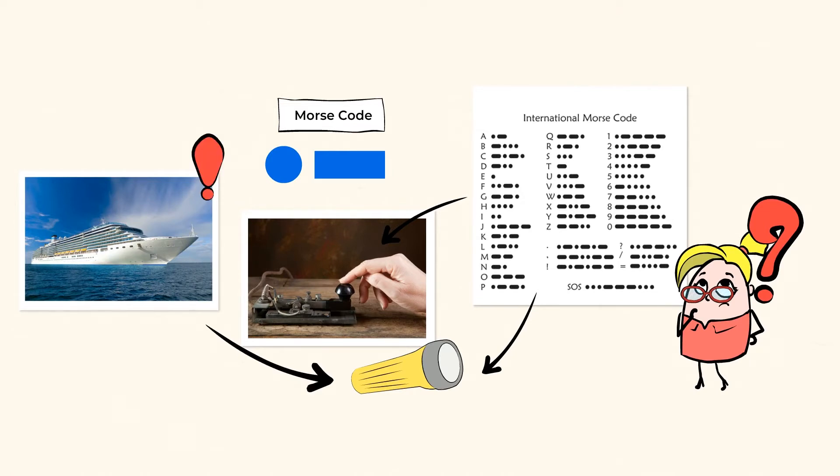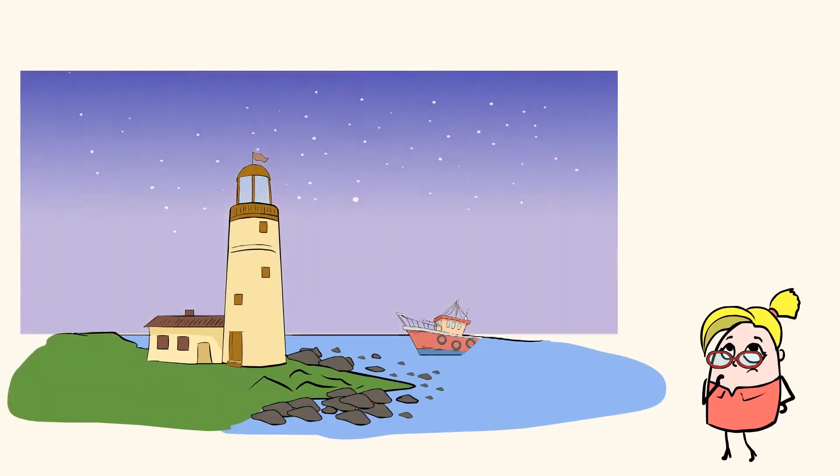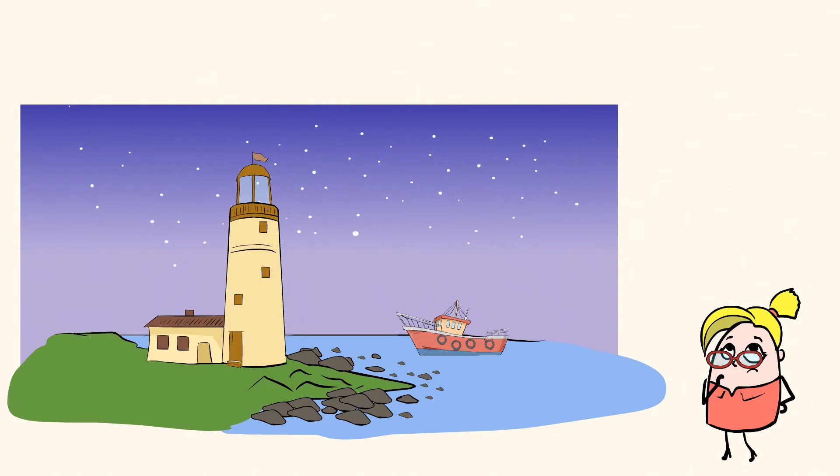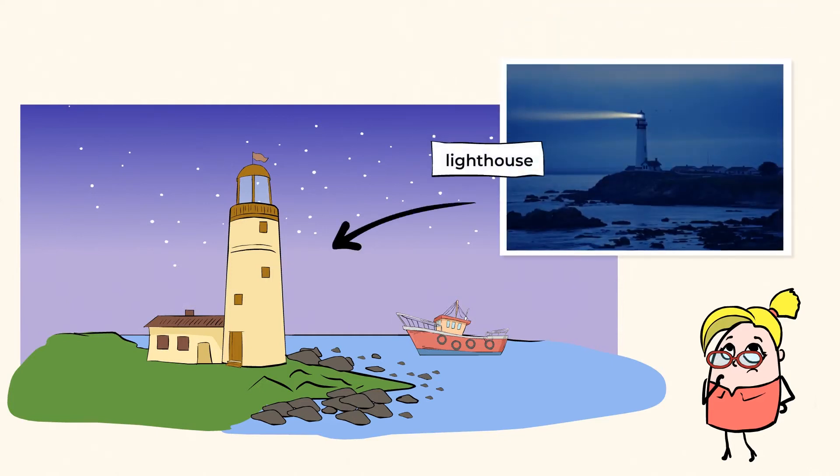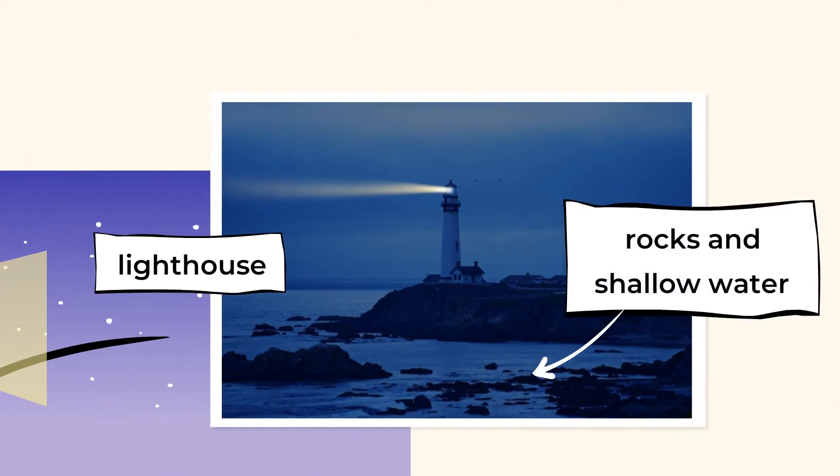And speaking of ships, let's explore another form of communication that helps keep ships safe. It sure is dark out here on the ocean at night. Boats must have a hard time staying safe when it's this hard to see. The lighthouse is working to keep these boats safe. See?